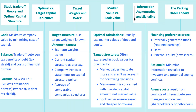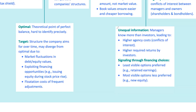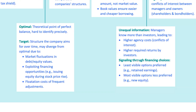Before we wrap up, let's touch on information asymmetry and signaling. Information asymmetry occurs when managers have more information about the company's prospects than investors, which can lead to agency costs — conflicts of interest between managers and shareholders. Signaling comes into play when companies make financing decisions that send messages to investors. For example, issuing debt might signal that management is confident in the company's future cash flows, while issuing equity could suggest they think the stock is overvalued. When Google decided to issue debt for the first time in 2011, it signaled to the market that the company was confident in its future cash flows, even though it had plenty of cash on hand.